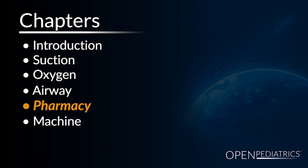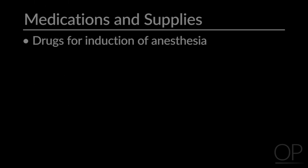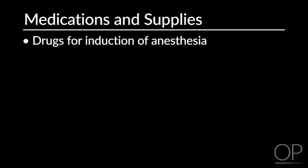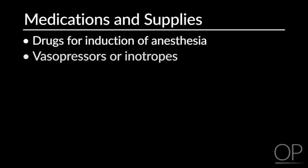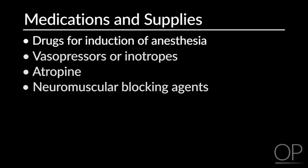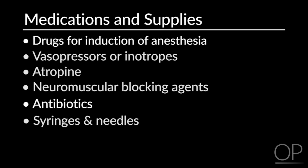Drugs should be available for induction of anesthesia, vasopressors or inotropes, and atropine to support hemodynamics, as well as neuromuscular blocking agents to facilitate endotracheal intubation or to treat laryngospasm. Appropriately selected antibiotics should be available in the operating room prior to incision. Syringes and needles should be prepared for drawing up and administering medications.